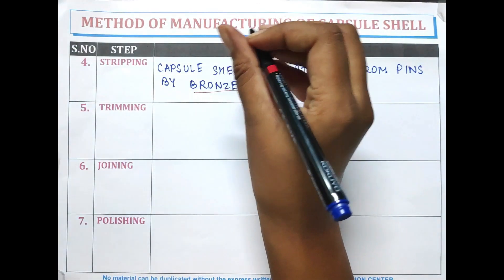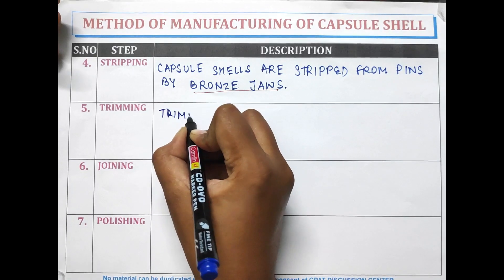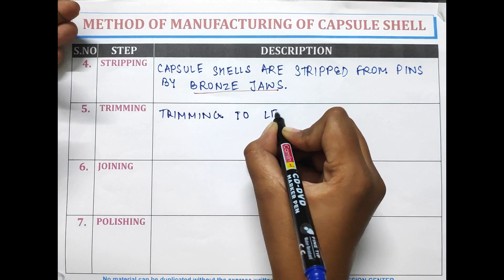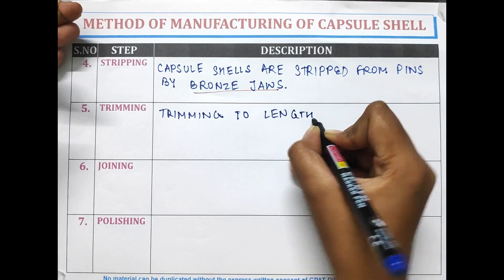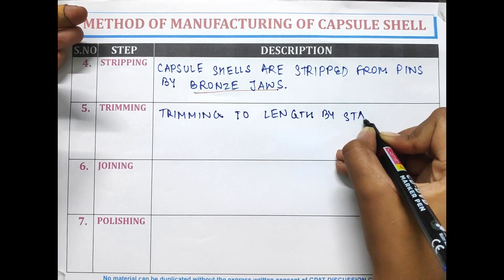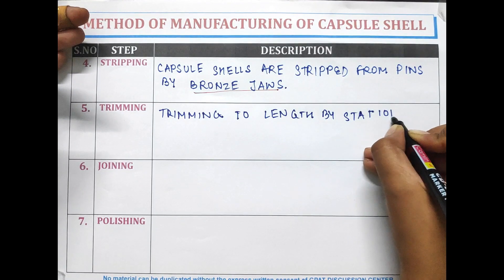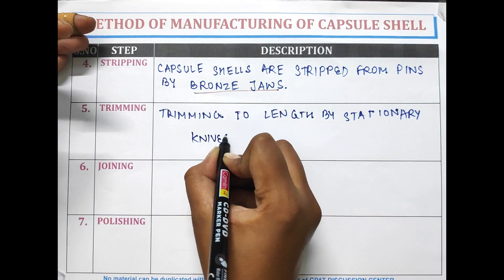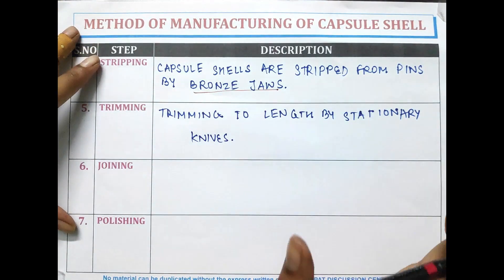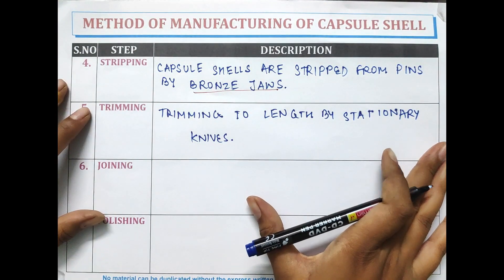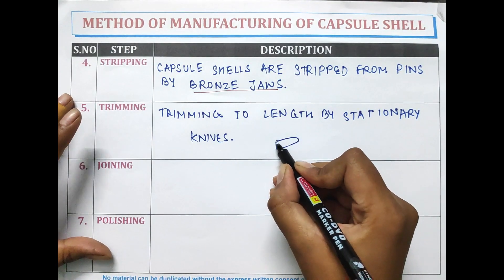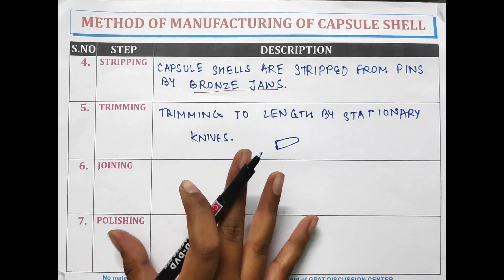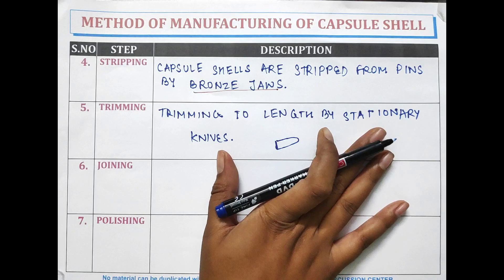After stripping, trimming is performed. In trimming, the capsule shells are trimmed to the desired length by stationary knives. The capsule shells that were removed in the stripping process are cut into the desired length.